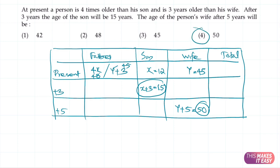So if you get all this information from the questions into a table like this, half the work is done. Then you just make some simple basic algebra and the answer is ready.